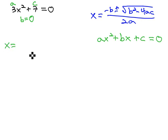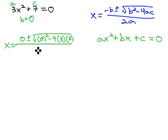Now, we can plug these values into the quadratic formula. x is equal to the opposite of b, which is still 0, plus or minus the square root of b, which is 0, squared, minus 4a, which is 3, c, which is 7, all over 2a, which is 3.